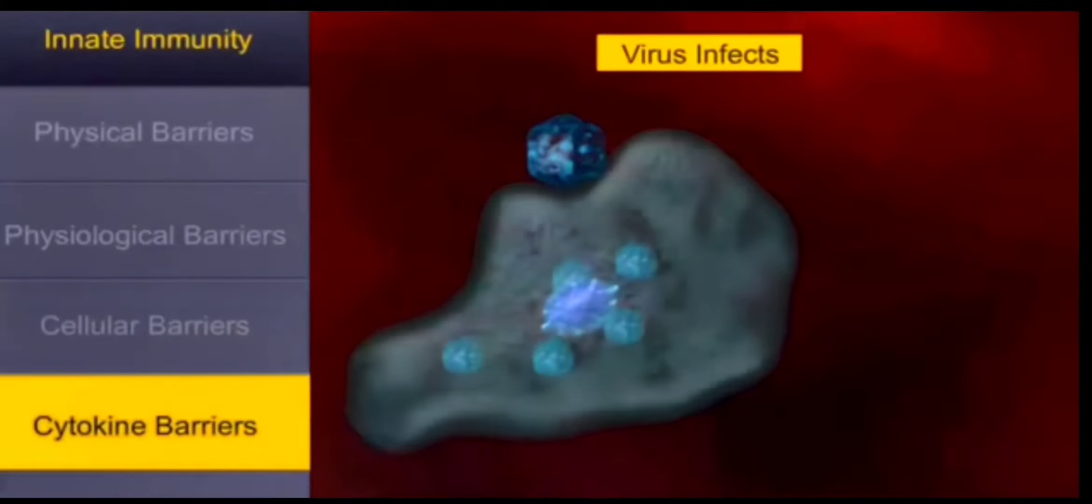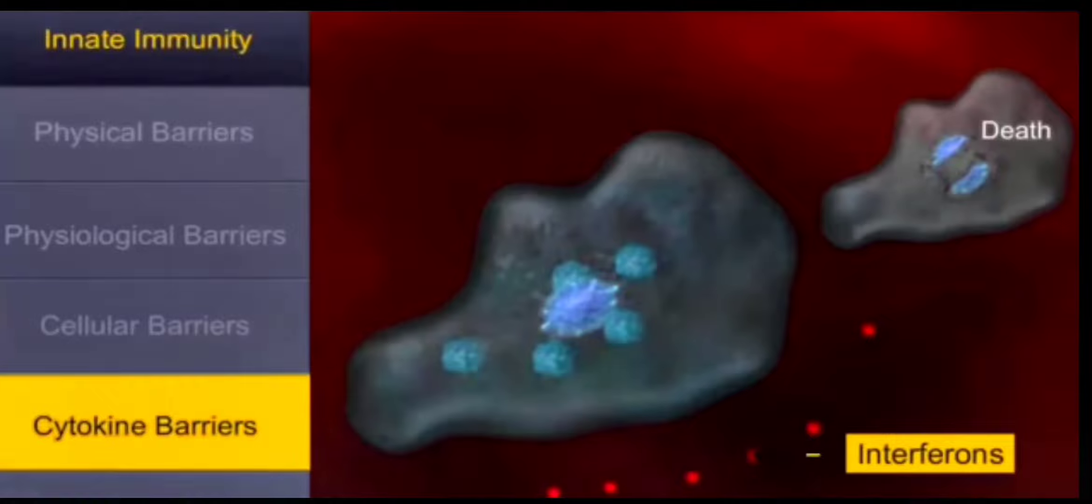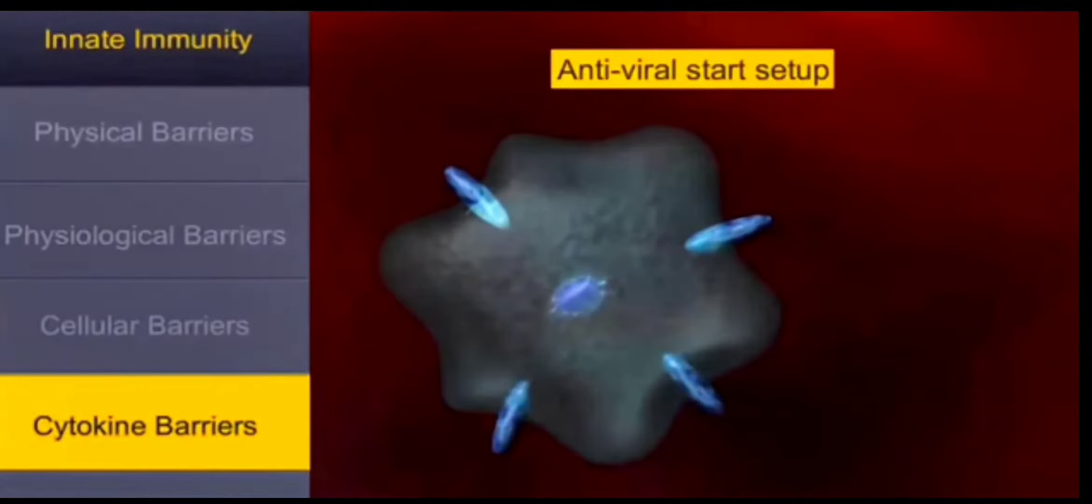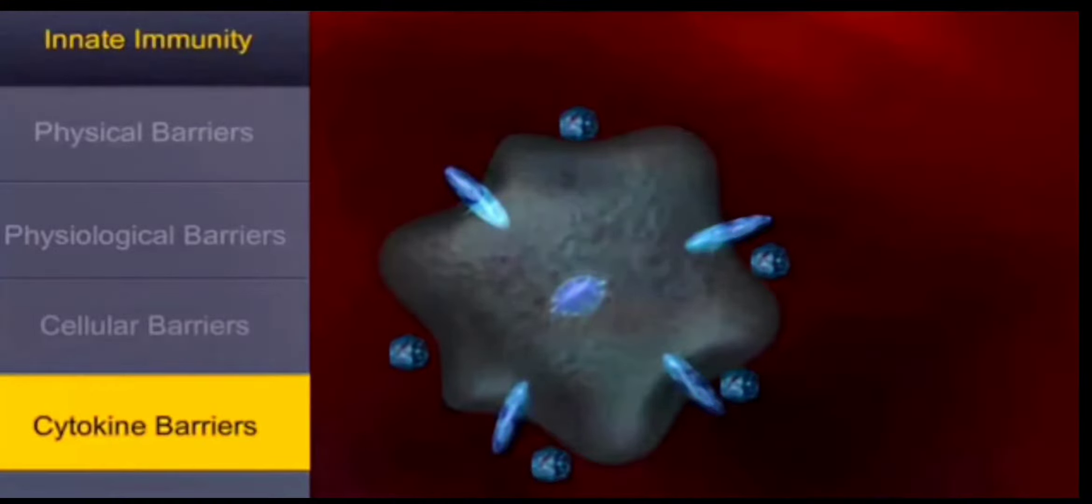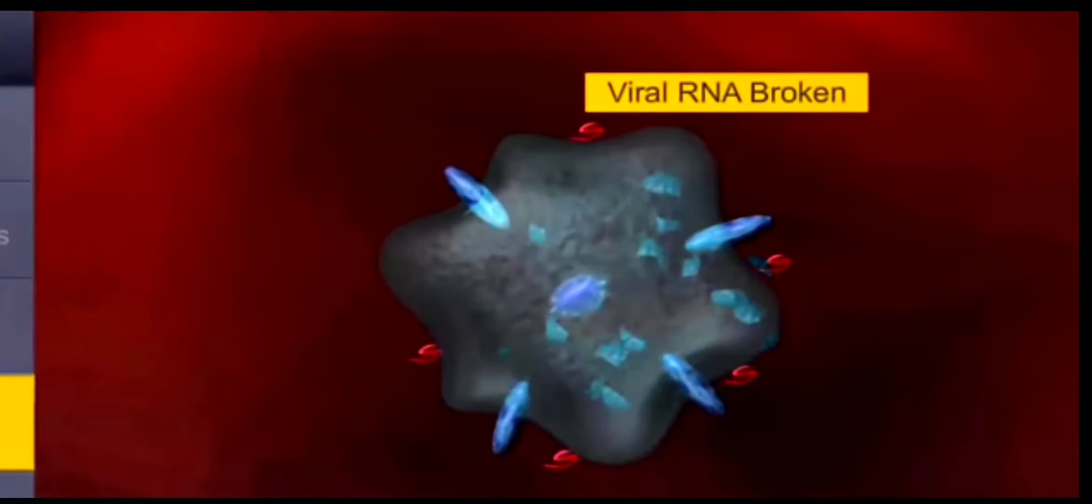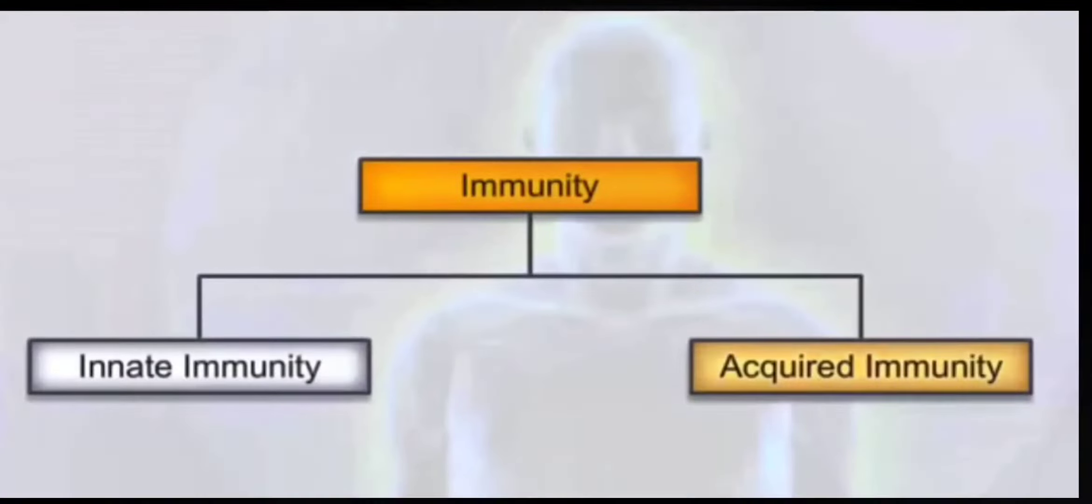Then come the cytokine barriers. Whenever any cell is infected by virus, that cell produces some cytokines called interferons. These cytokines protect our healthy cells from viral infections.